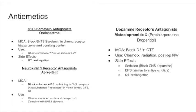We can now discuss antiemetics — medications that resolve nausea and vomiting. The first and most important medication we are going to talk about is ondansetron. Ondansetron is a serotonin antagonist; it hits the 5-HT3 receptor. What is important to know is that it is a serotonin antagonist, and it blocks serotonin in the chemoreceptor trigger zone and the vomiting center.